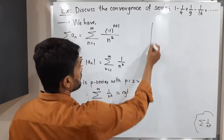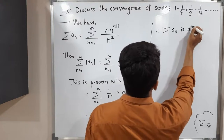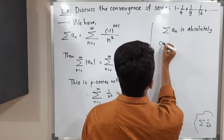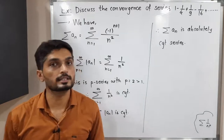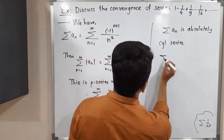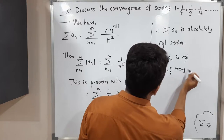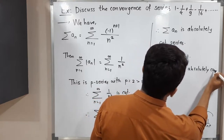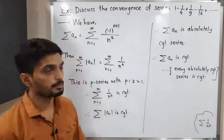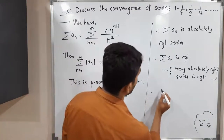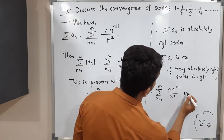That means summation n is an absolutely convergent series. We have already proved one result: every absolutely convergent series is convergent. So therefore, summation n is convergent — this is a convergent series. The reason is every absolutely convergent series is convergent. So using this result, we can say the given series is convergent. Therefore, the given series, minus 1 raised to n plus 1 upon n square, is convergent.